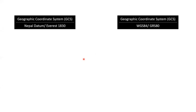Two of the GCS that are of our concern are Nepal Datum and WGS84 Datum. Nepal Datum is the National Datum of Nepal and it uses Everest 1830 as its reference ellipsoid. WGS84 is a global datum and its reference ellipsoid is GRS80.